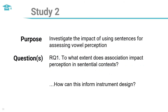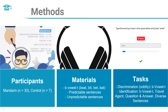The aim of Study 2 was to further explore the extent to which sentences could provide viable testing materials. The primary research question was: to what extent does association impact perception in sentential contexts? Study 2 included 33 Mandarin L1 speakers and 7 controls. The goal was to recruit at least 40 participants for each group; however, COVID struck and changed things. The Mandarin group was an advanced cohort with an average IELTS score of 7.3 overall and 7.8 for listening.